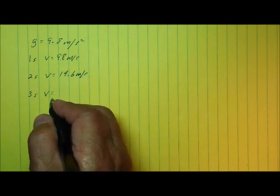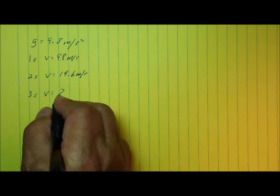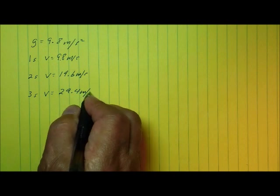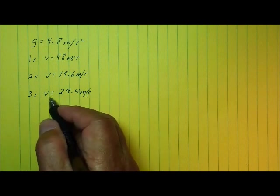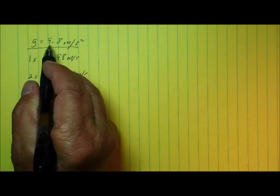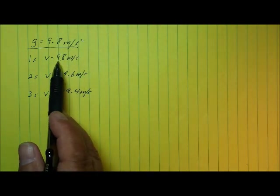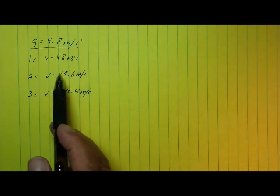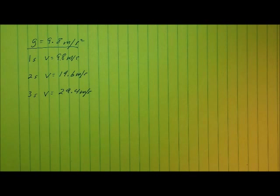And then after three seconds, that velocity would have tripled, and the velocity would be 29.4 meters per second. So you see that as an object accelerates downward under the influence of gravity at 9.8 meters per second squared, its velocity increases by 9.8 meters per second every second. If you want to know what the velocity is after any given time of fall, just multiply the time times the acceleration.